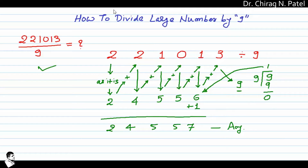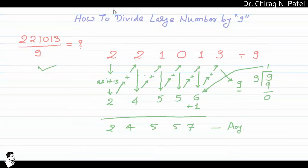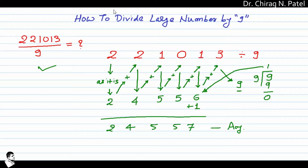So the final answer is 2, 4, 5, 5, 7. This is the way you can get the answer of a very large number divided by 9 in a very quick and easy way.